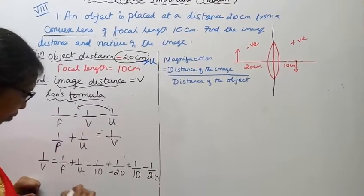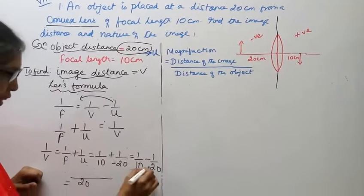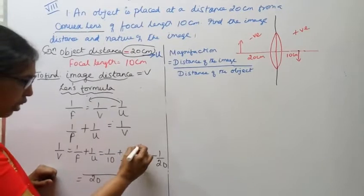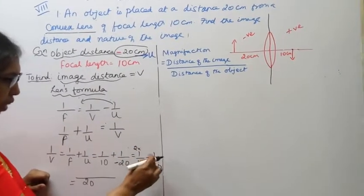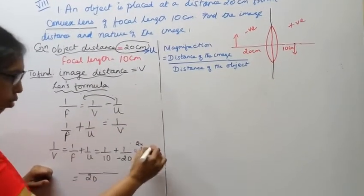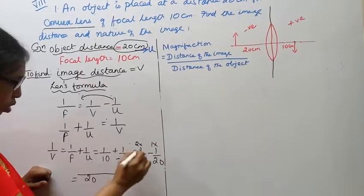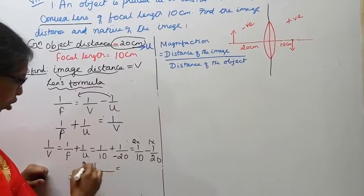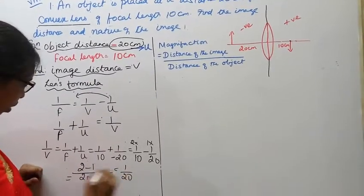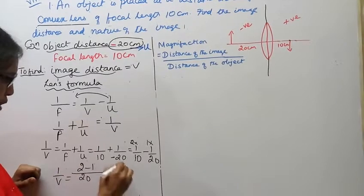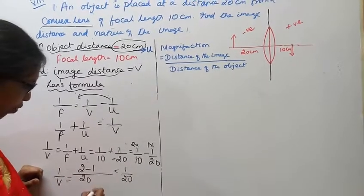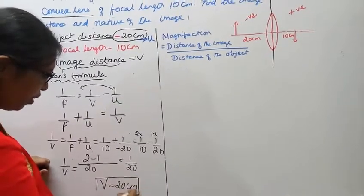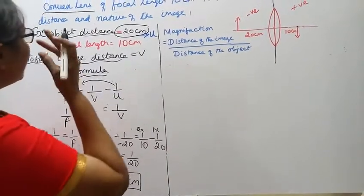The LCM is 20. So 2/20 − 1/20 = 1/20. Therefore v = 20 cm. The image distance is 20 cm.